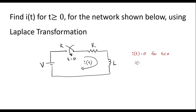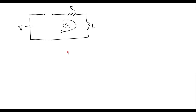It means that I of 0 minus is 0 amps. For t greater than or equal to 0 we have to find I of t. At t equal to 0 the switch will be closed. Now assume that the switch is closed and current will start flowing in the circuit.